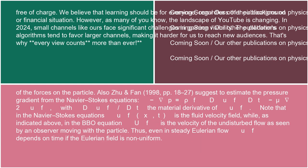Also, Zhu and Fan (1998, pages 18 to 27) suggest to estimate the pressure gradient from the Navier-Stokes equations: −∇p = ρf (Duf/Dt) − μ ∇²uf, with Duf/Dt the material derivative of uf. Note that in the Navier-Stokes equations uf(x, t) is the fluid velocity field, while in the BBO equation uf is the velocity of the undisturbed flow as seen by an observer moving with the particle. Thus, even in steady Eulerian flow, uf depends on time if the Eulerian field is non-uniform.